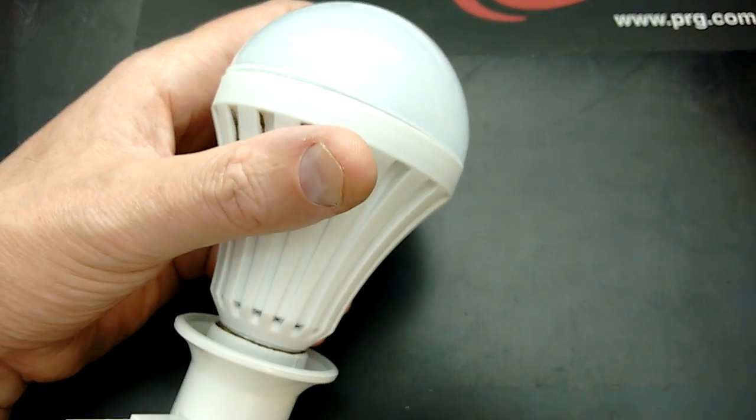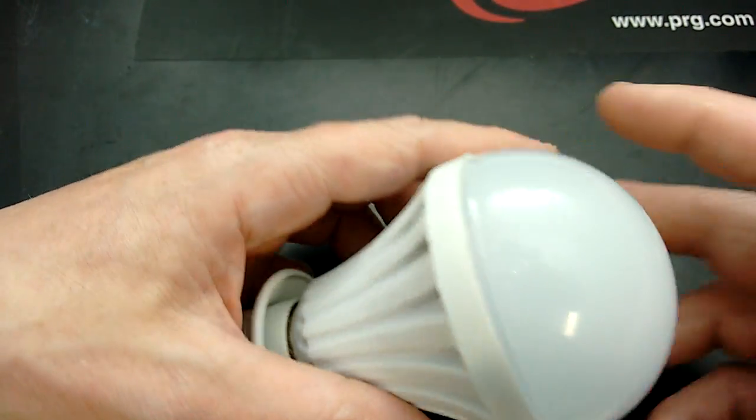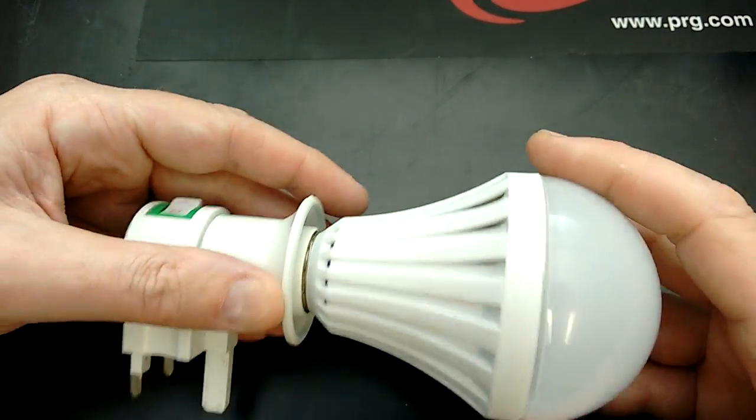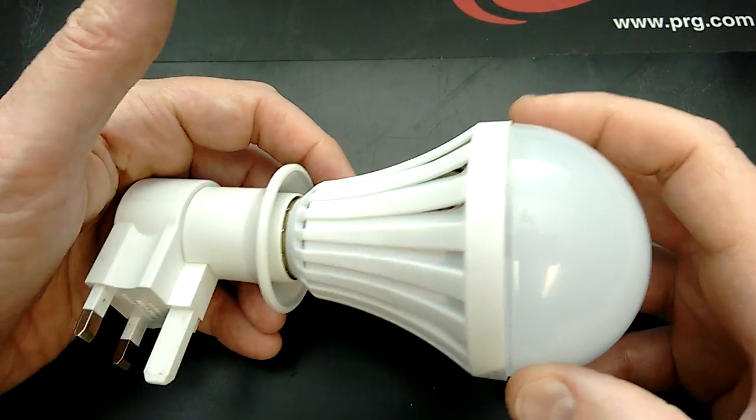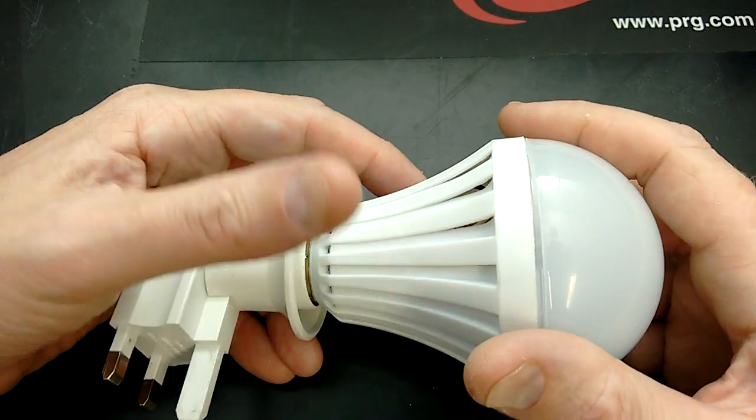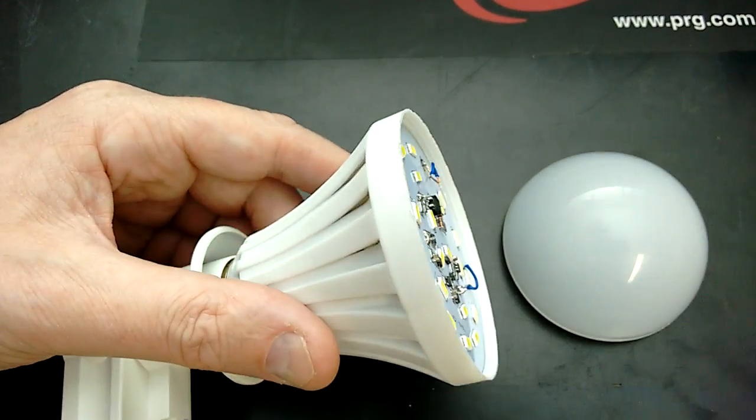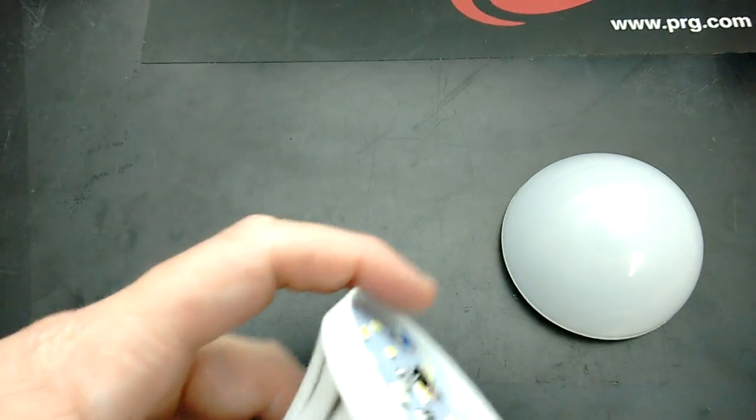You can get them in cold white or warm white and various power ratings apparently. However, the idea is that you screw this into the lamp holder in the room and in normal use it lights up and it also charges an internal battery. And the internal battery, let's see if I can just hike this out here.